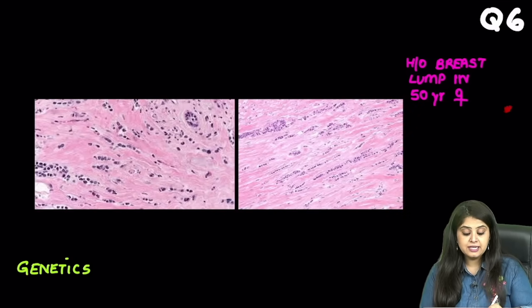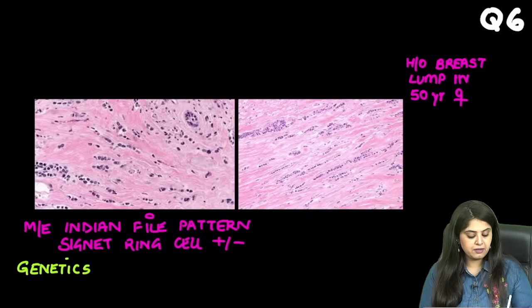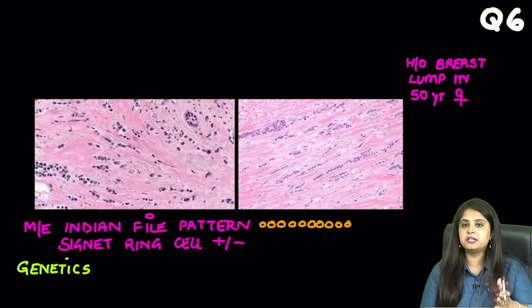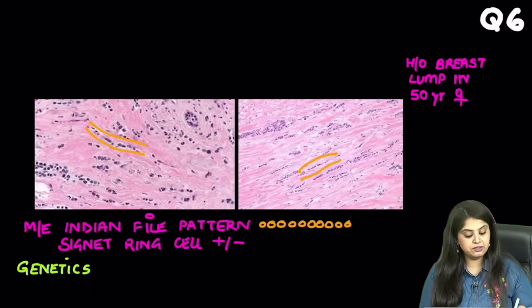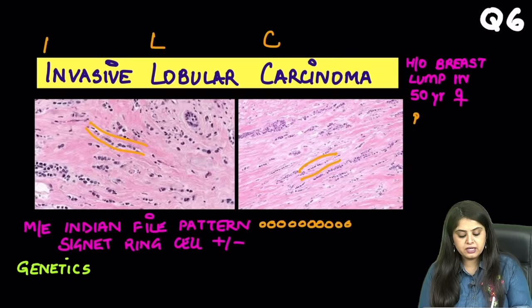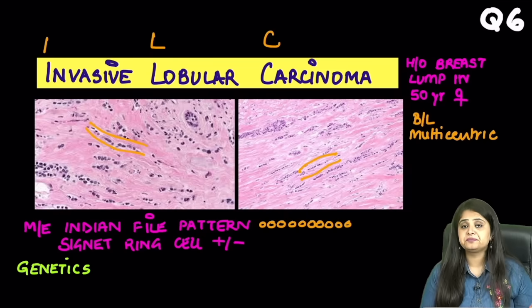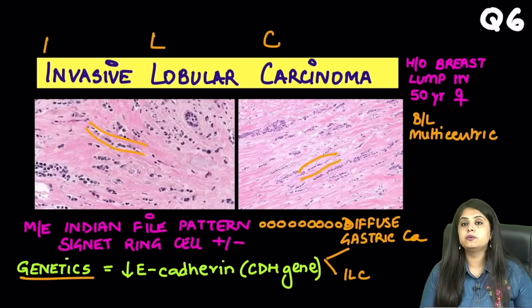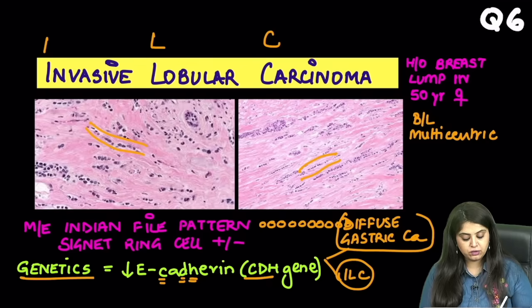Moving on to question 6: a breast lump biopsy in an elderly 50-year-old female, obviously suggesting cancer. This biopsy picture shows the classical Indian file pattern — like disciplined Indian army men, the tumour cells are standing in a straight line, one behind the other. That is the Indian file pattern, seen in invasive lobular carcinoma (ILC). This tumour can many times be bilateral and multicentric. If a female has invasive lobular carcinoma of the left breast, always examine the right breast as well, because it might be bilateral. Genetically, this occurs due to down-regulation of E-cadherin, encoded by the CDH gene, which is mutated in two tumours: invasive lobular carcinoma and diffuse gastric cancer.